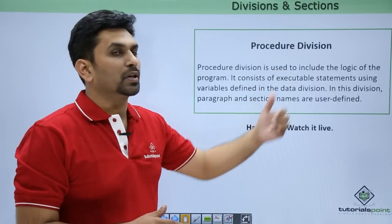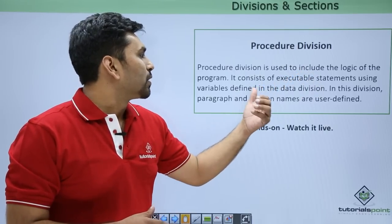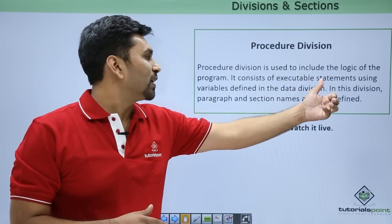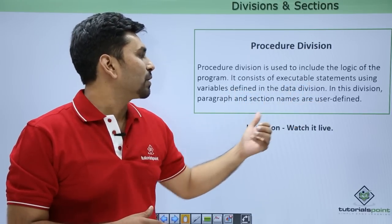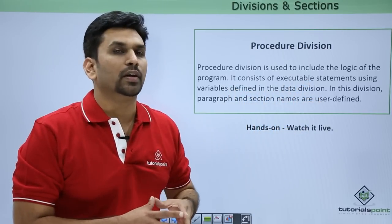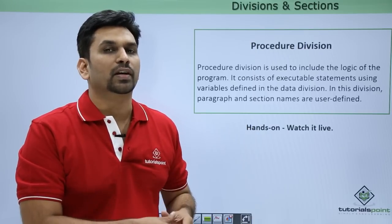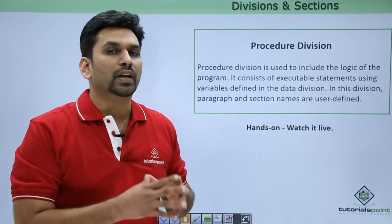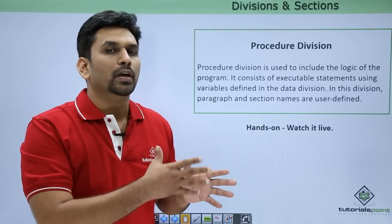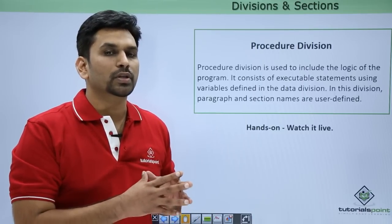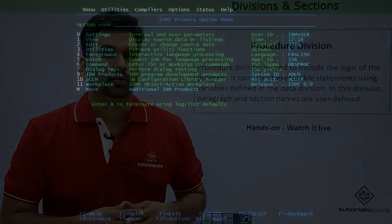The procedure division is the last division, where the program logic is written. It consists of executable statements using variables defined in the data division. Paragraph and section names inside the procedure division are user-defined. We declare user-defined paragraph names, write our logic inside them, and that logic is executed when we invoke the COBOL program using JCL.